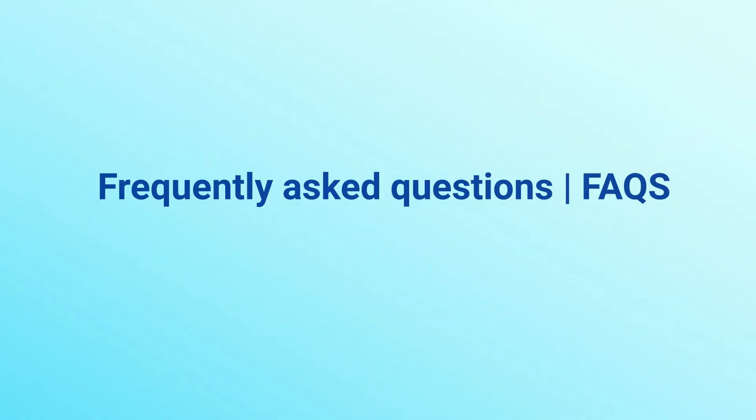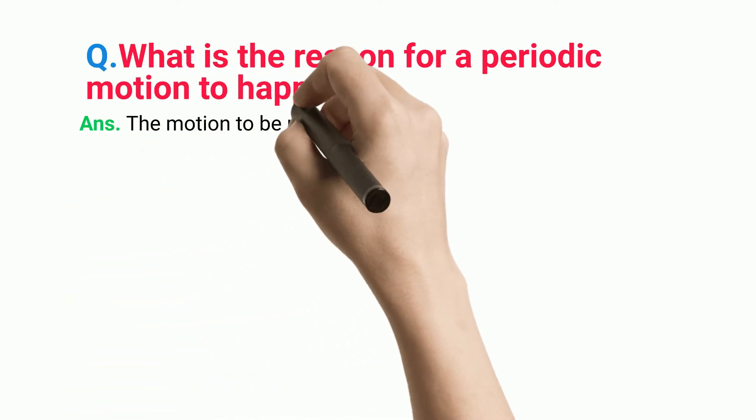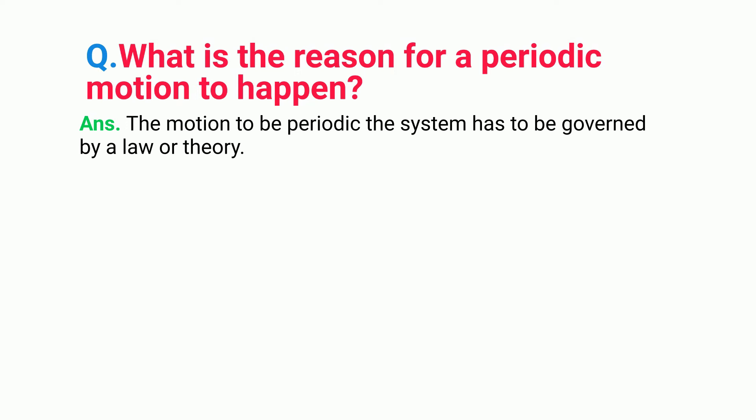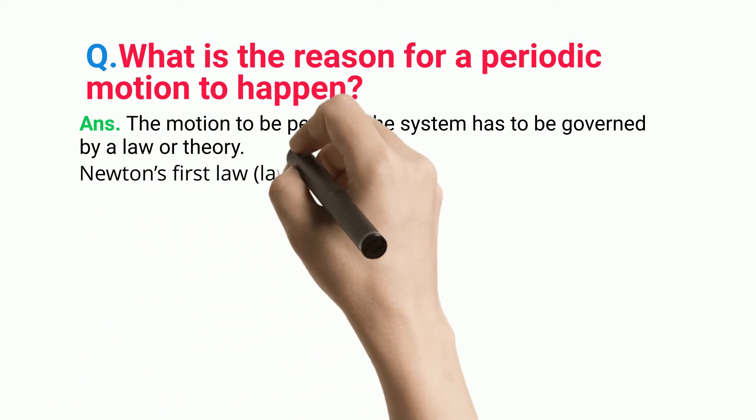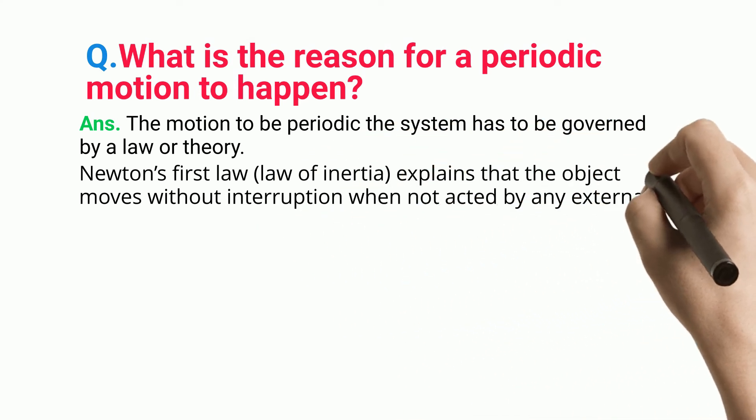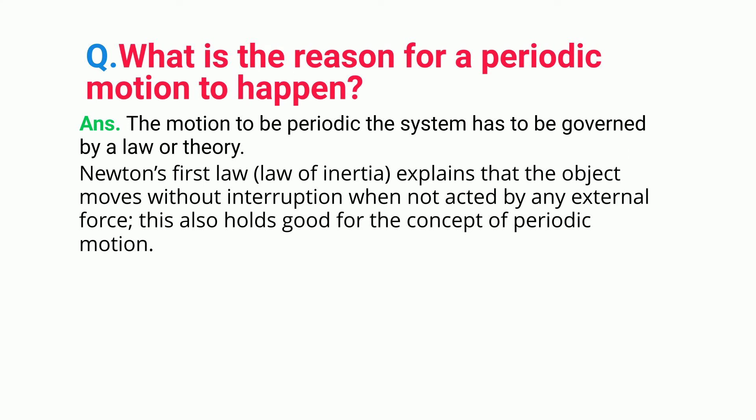Frequently asked questions: What is the reason for a periodic motion to happen? For the motion to be periodic, the system has to be governed by a law or theory. Newton's first law (law of inertia) explains that the object moves without interruption when not acted by any external force. This also holds good for the concept of periodic motion.